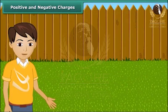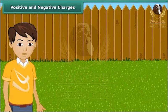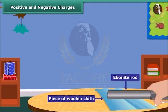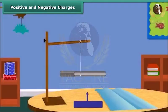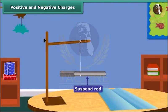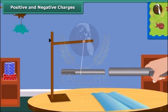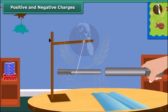Let us perform an activity to understand positive and negative charges. Take an ebonite rod and rub it with a piece of woolen cloth. Now suspend the rod by tying a thread through its middle. Now charge another ebonite rod in the same way and bring it close to the suspended rod. What do you notice? The suspended rod moves away from the second one.